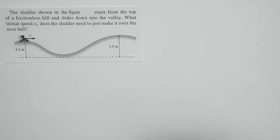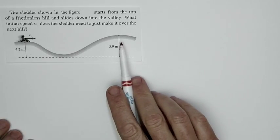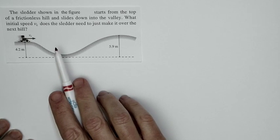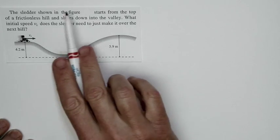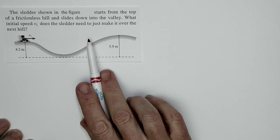This problem, which has to do with the sledder going down a hill and up another hill, is one of those ones that is basically taking the world and figuring out how to describe it in physics terms.